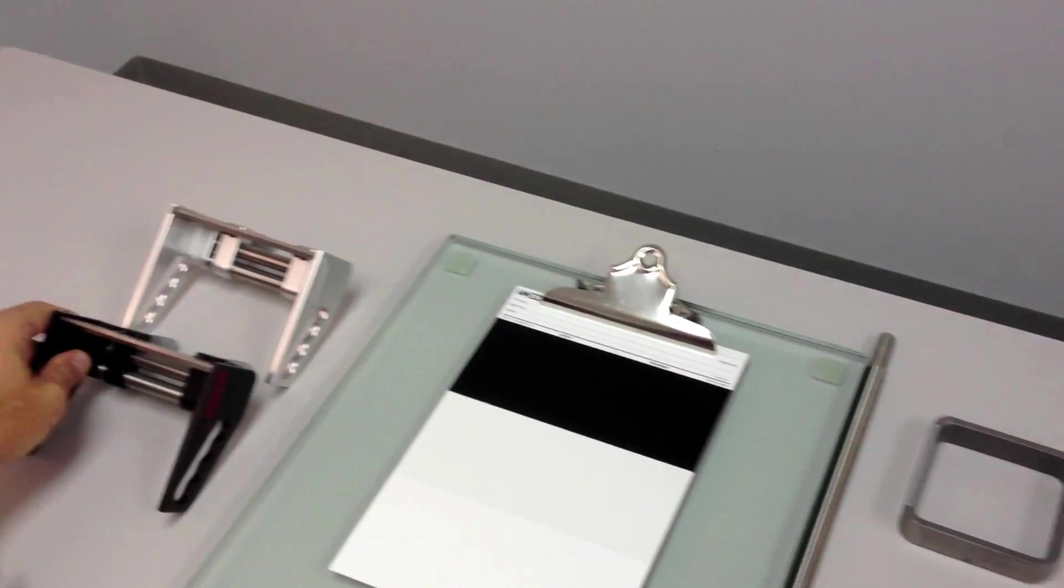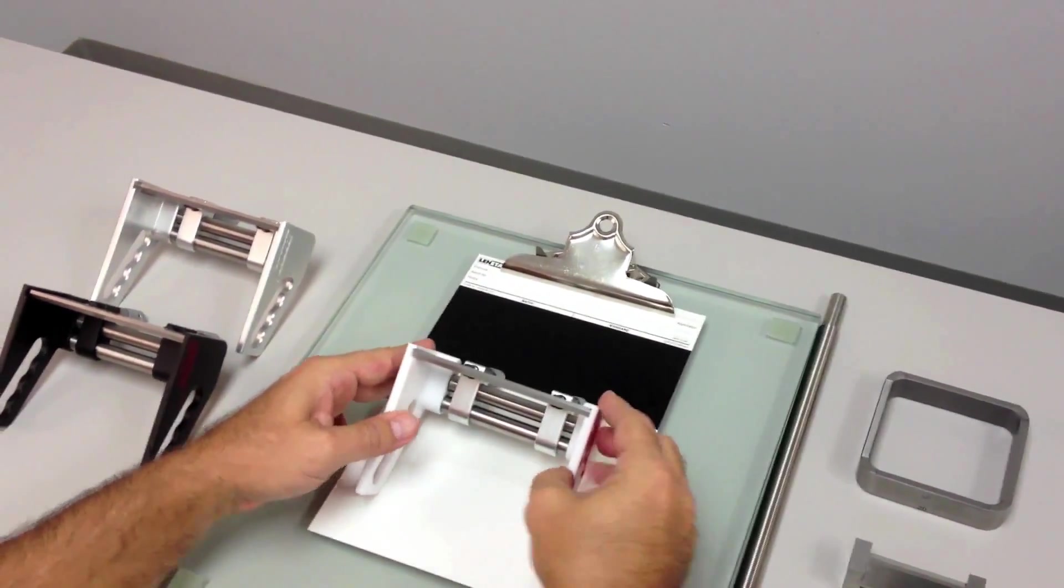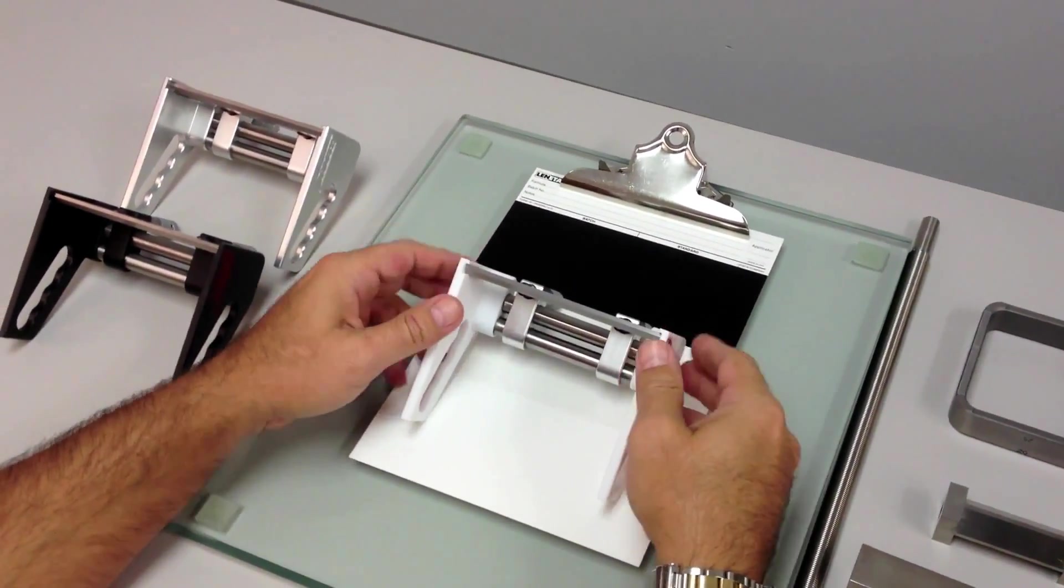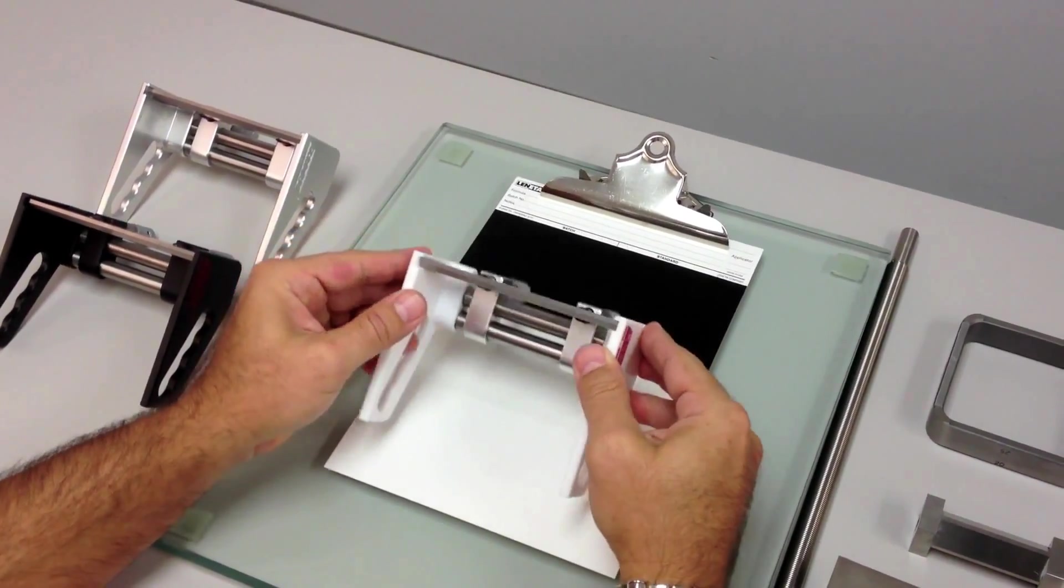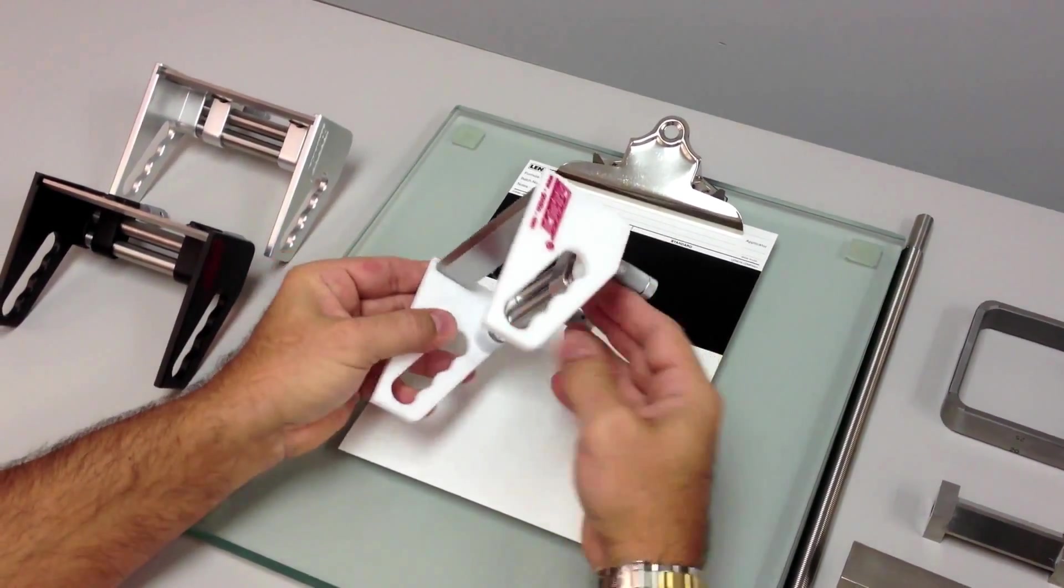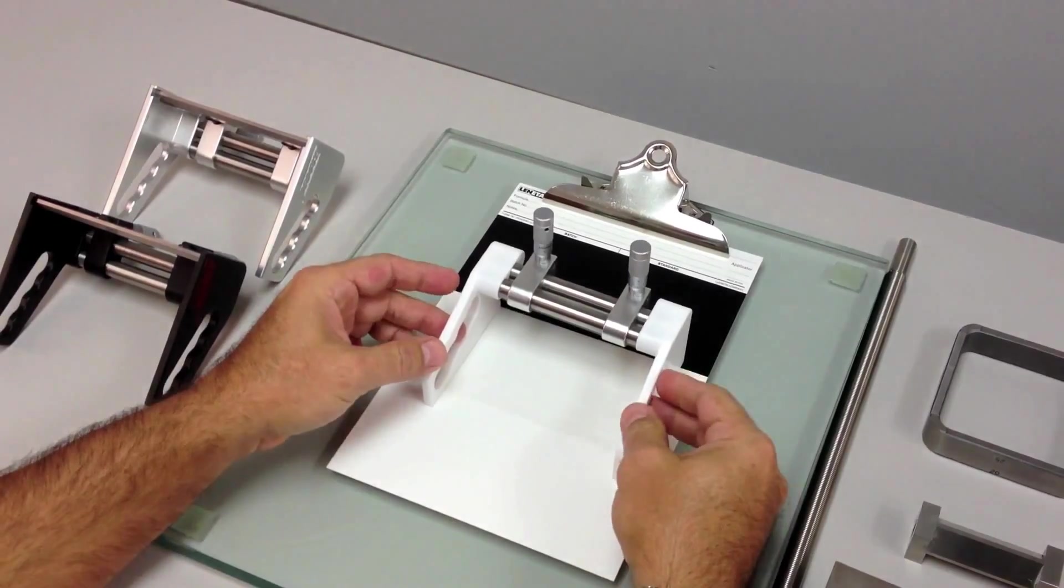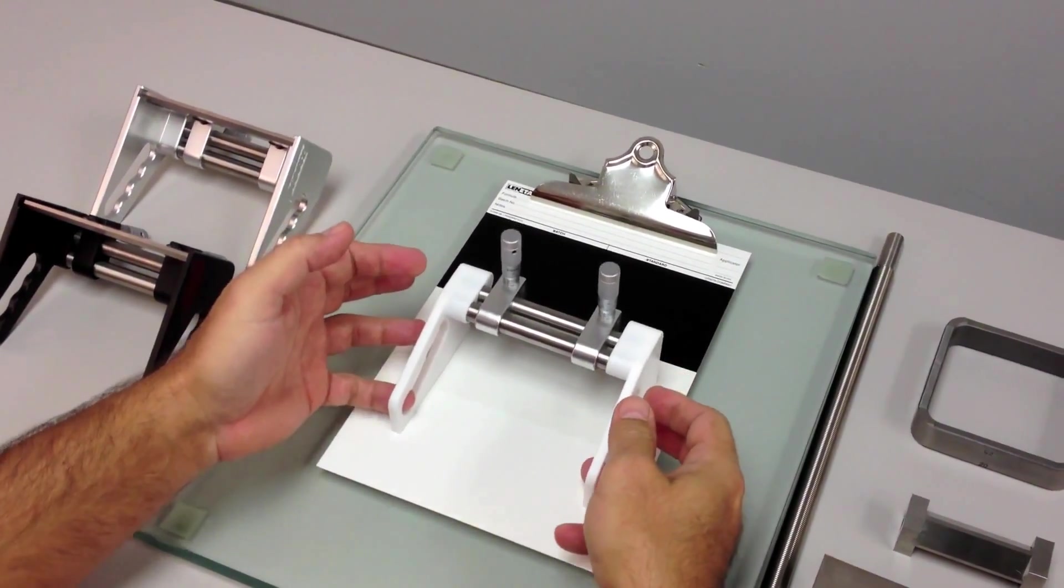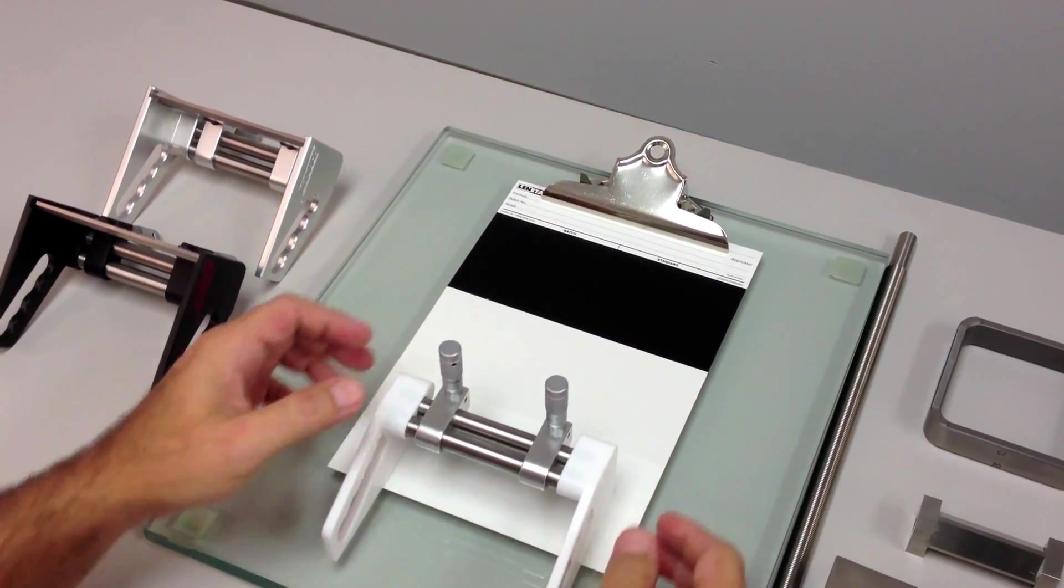Then we have the other type of Micron film applicator, which is pure Teflon. It also has the same properties as easy cleanup, but what makes this one more unique is that it has a very low coefficient of friction, so it just slides and glides across the substrate.